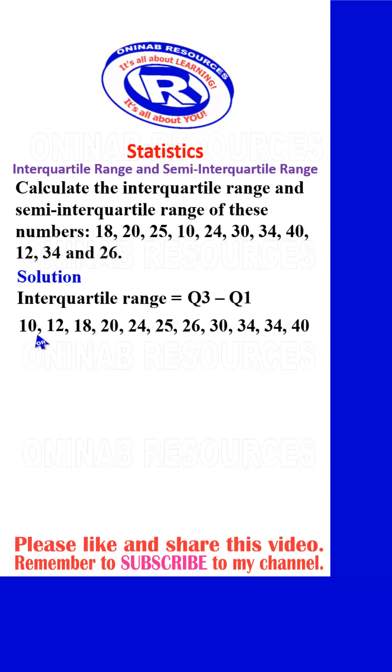We then go ahead to calculate the first quartile, which is Q1. And to do that, we are going to divide the numbers into two. We have 11 numbers: 11 divided by 2 gives 5.5. We then remove the 0.5, we'll be left with 5.